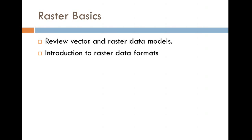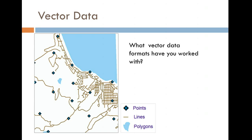Anything else about vector data? Someone said it's flat - like topographical and flat, whereas raster is more 3D. The amount of data required and files are a lot smaller. So point, lines, and polygons are really good for getting a more realistic picture of the landscape. They're a simpler format in some ways - it's X and Y coordinates around that shape, shapefiles.